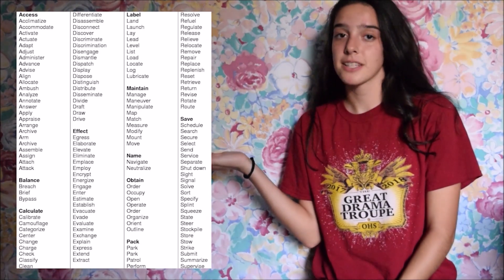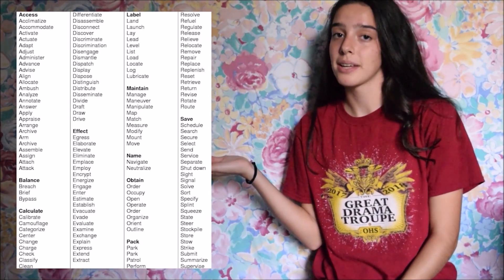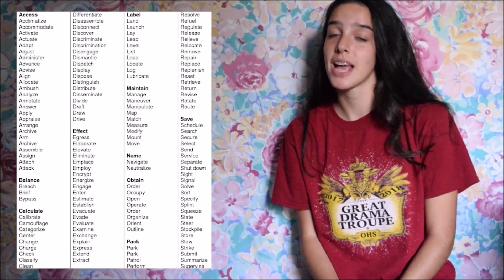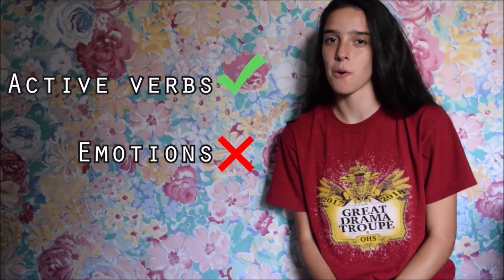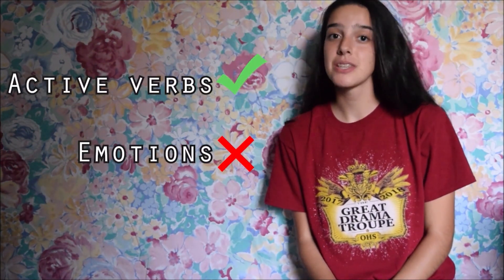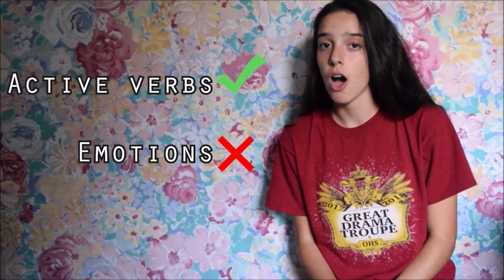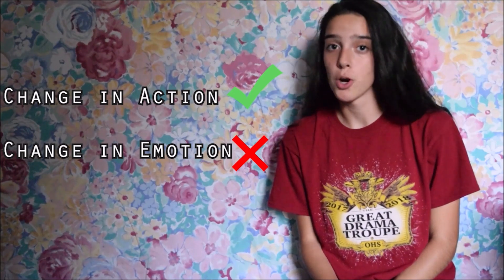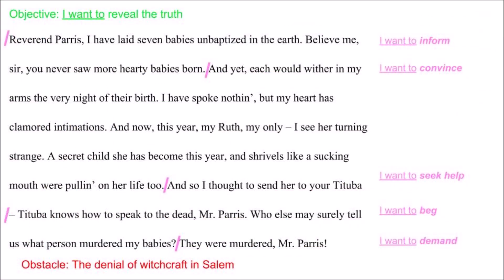Here are a few examples of active verbs that you can use while adding beats to your monologue or scene. You can find these active verbs anywhere, so you do not have to copy all of these down. It is important to know that only active verbs are used when scoring your script — don't make the mistake of adding emotions and not verbs. A beat is a change in action, not emotion. In this example, you can see that I have five beats written down following the format 'I want to,' followed by an active verb, in the margins.